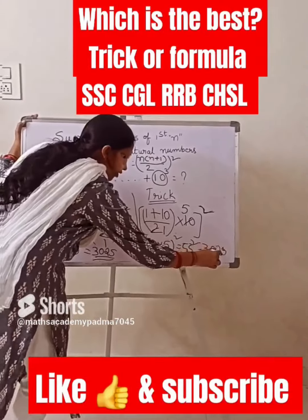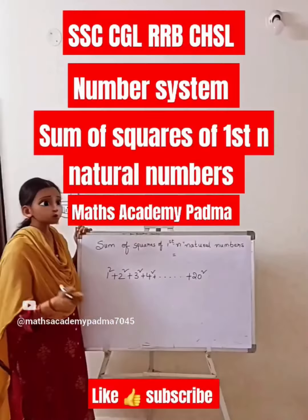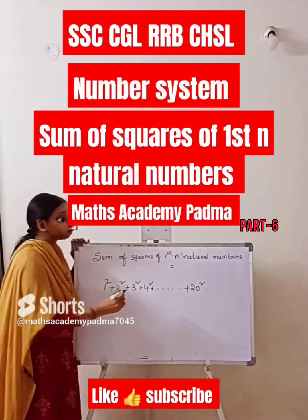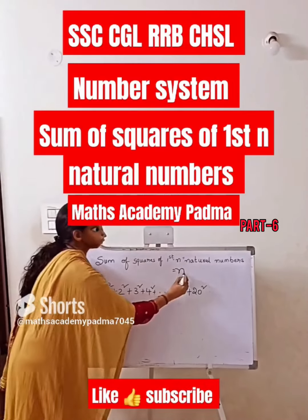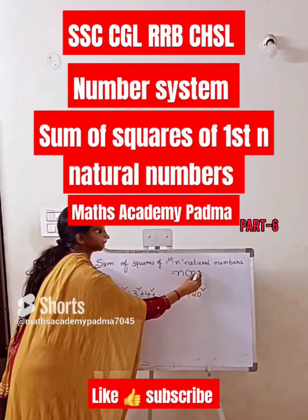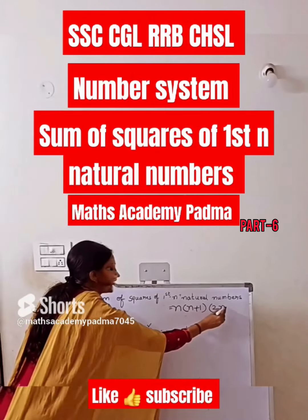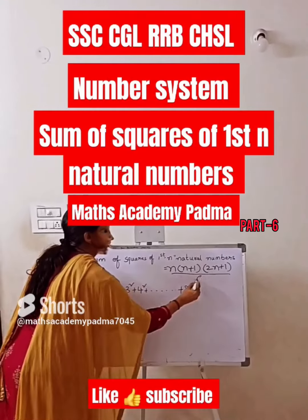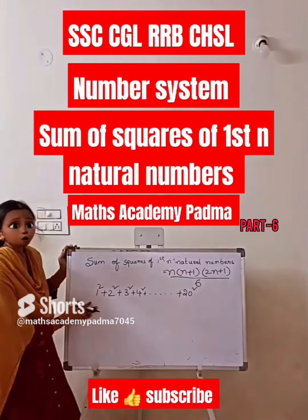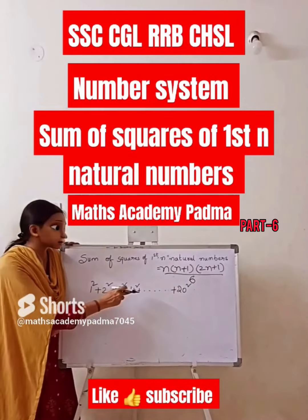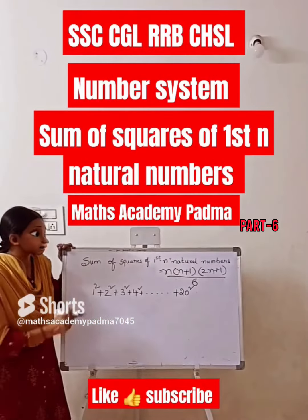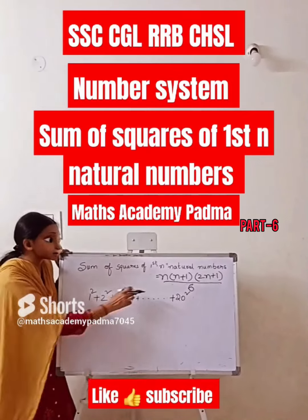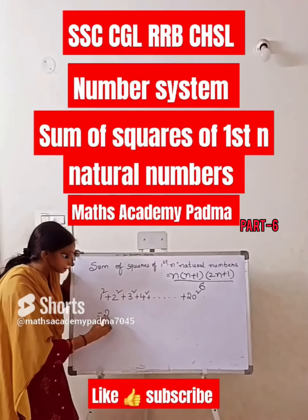Now the sum of squares of the first n natural numbers uses the formula n(n+1)(2n+1)/6. Question: 1² + 2² + 3² + 4² + ... + 20². Here n is the number of terms, so n equals 20.